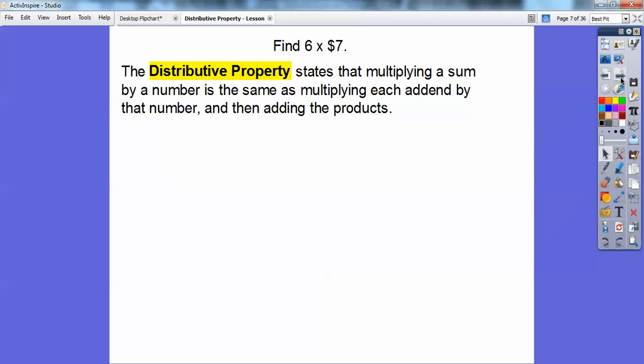The distributive property states that multiplying a sum—a sum means addition—by a number is the same as multiplying each addend by that number and then adding the products. Product is just the answer to a multiplication problem. I'll explain that in just a second.